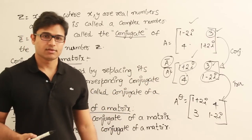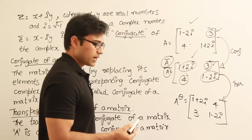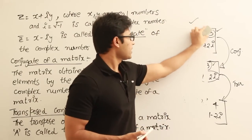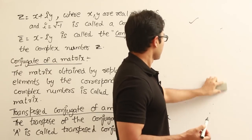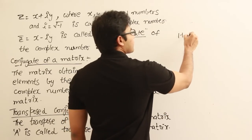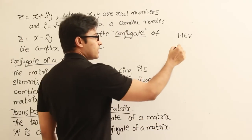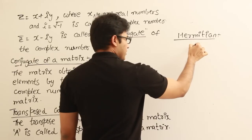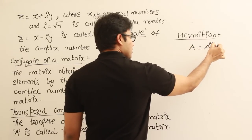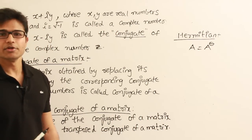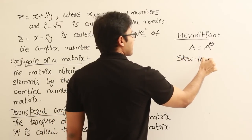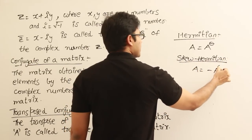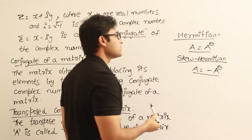Based on these definitions, two special matrices are defined. One matrix is called Hermitian matrix and the other is called skew-Hermitian matrix — similar to symmetric and skew-symmetric matrices. A Hermitian matrix is one where the matrix is equal to its transposed conjugate. A skew-Hermitian matrix is one where the matrix is equal to the negation of its transposed conjugate.